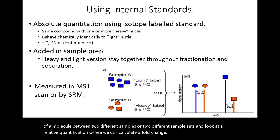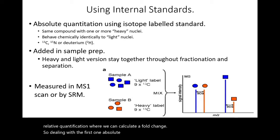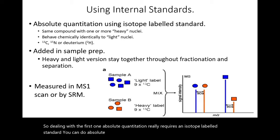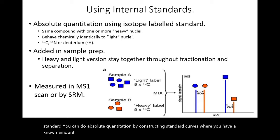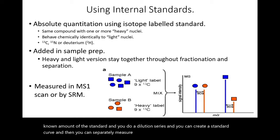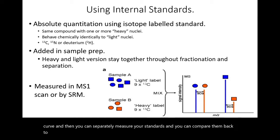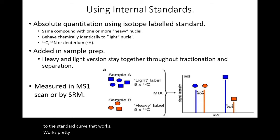Dealing with the first one — absolute quantitation — it really requires an isotope-labeled standard. You can do absolute quantitation by constructing standard curves where you have a known amount of the standard, you do a dilution series, and you can create a standard curve. Then you can separately measure your standards and compare them back to the standard curve. That works pretty well.